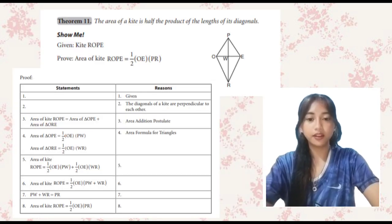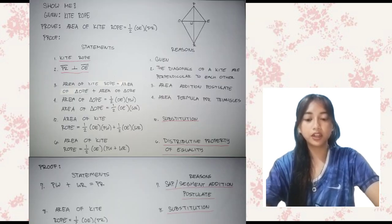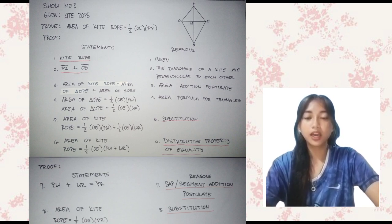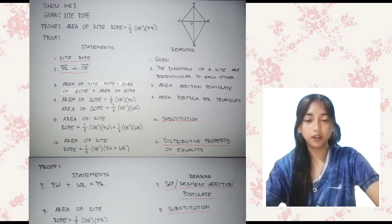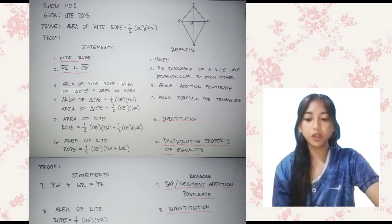Theorem 11: The area of a kite is half the product of the lengths of its diagonals. Given: Kite TROPE. Proof: Area of kite TROPE equals one-half times OE times PR. Reason 1: Given — Kite TROPE. Reason 2: The diagonals of a kite are perpendicular to each other. Statement: Segment PR is perpendicular to segment OE.